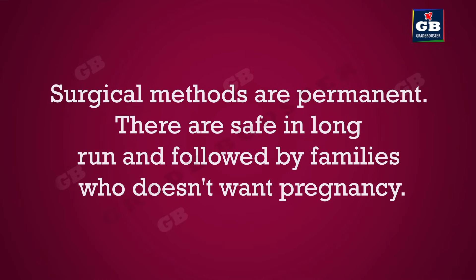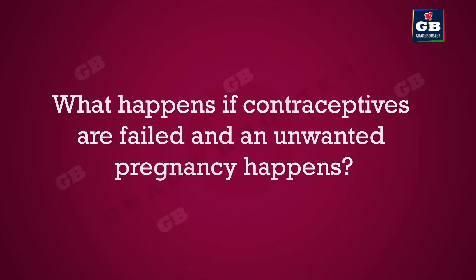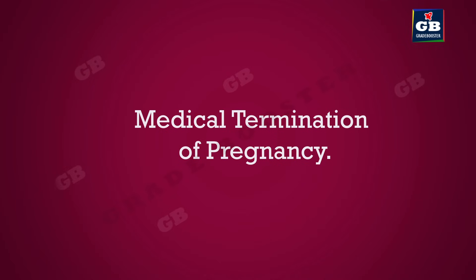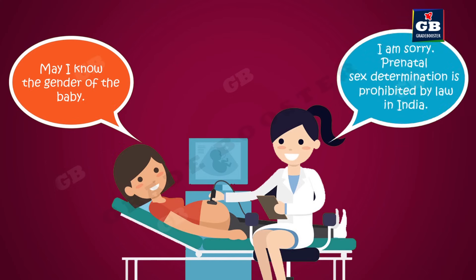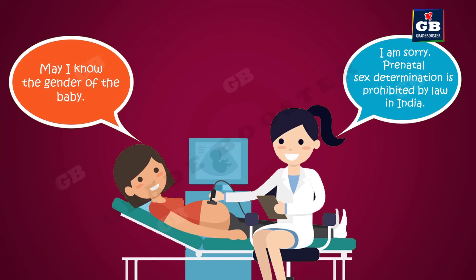If contraceptives fail and unwanted pregnancy occurs, medical termination of pregnancy (MTP) is possible through medical surgery, but only under special circumstances. Abortion or MTP is illegal if done by personal choice. In many families there is reluctance toward a girl child, leading to illegal sex-selective abortion of female fetuses. For this reason, prenatal sex determination has been prohibited by law.